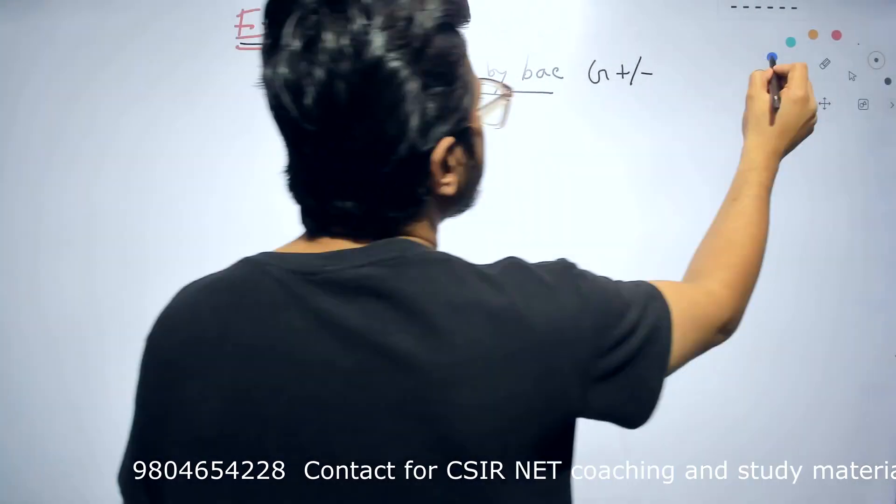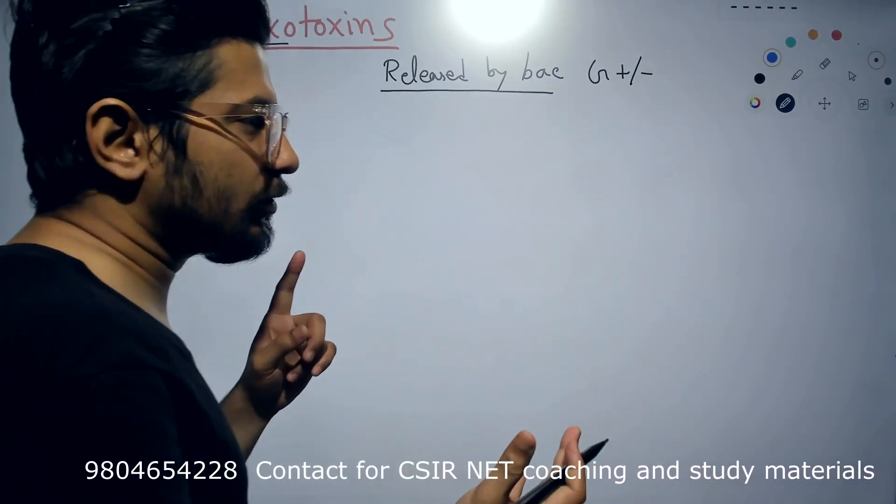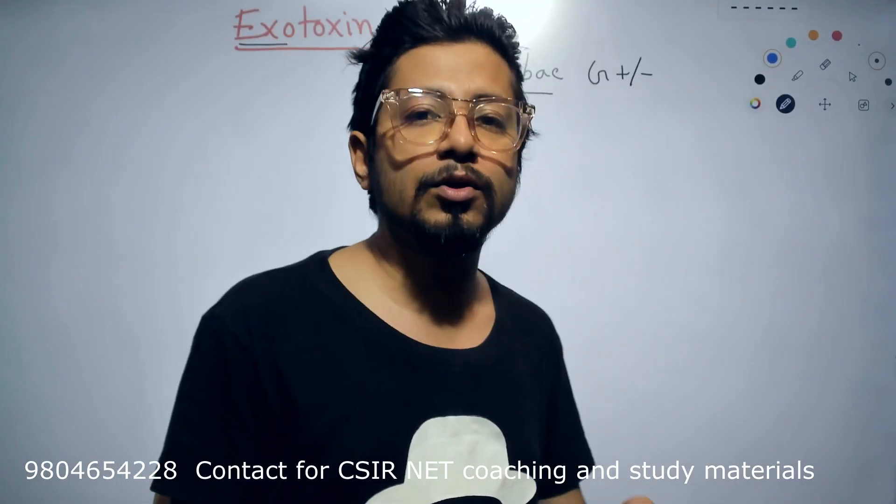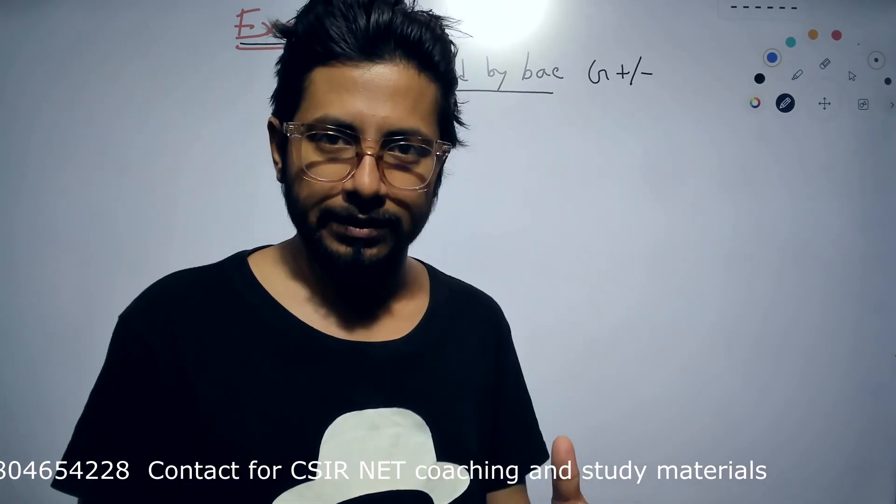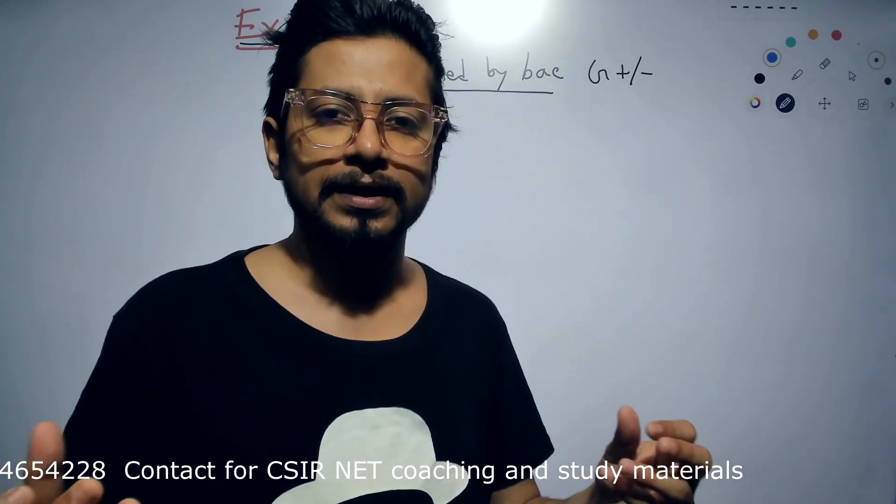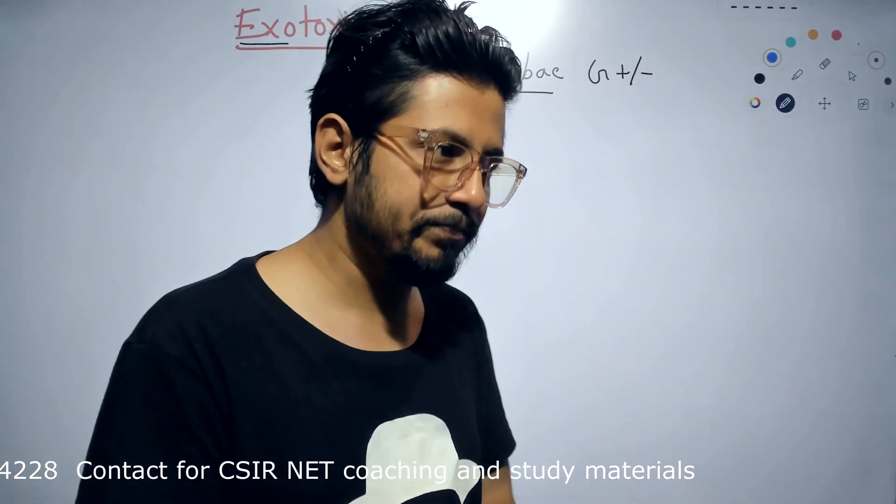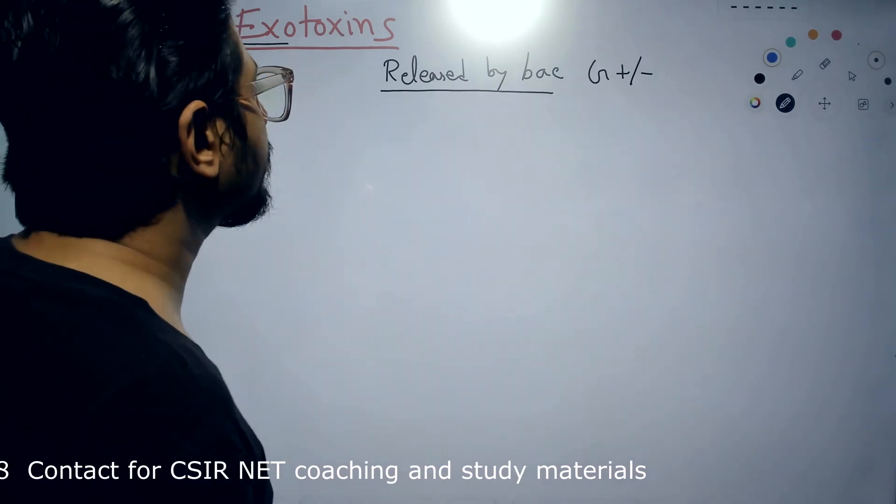To release exotoxin, the bacteria may live. They don't need to die in order to release the toxin. While in case of endotoxin, endotoxin is only activated when the bacteria is dead and the components of the outer membrane are floating in the environment. That is one fundamental difference between endotoxin and exotoxin.